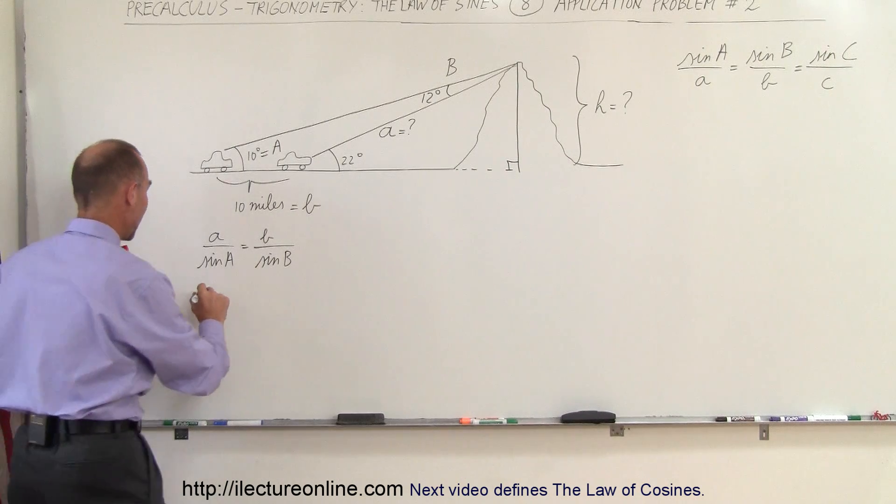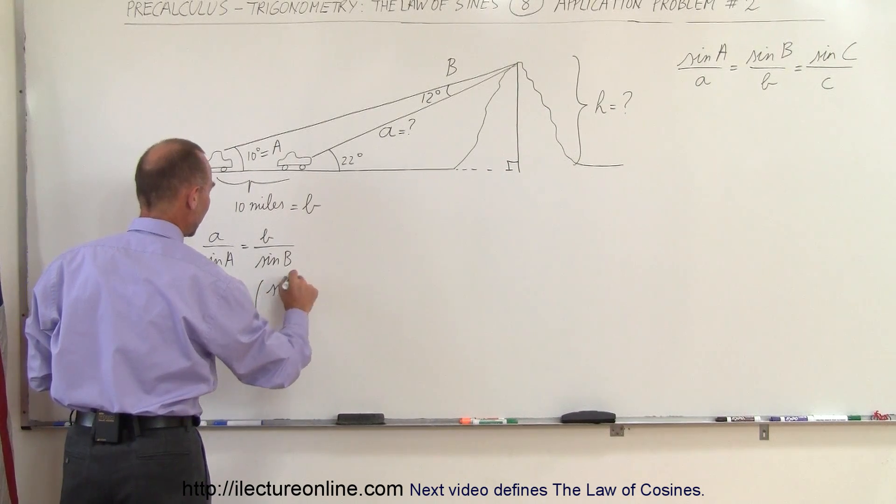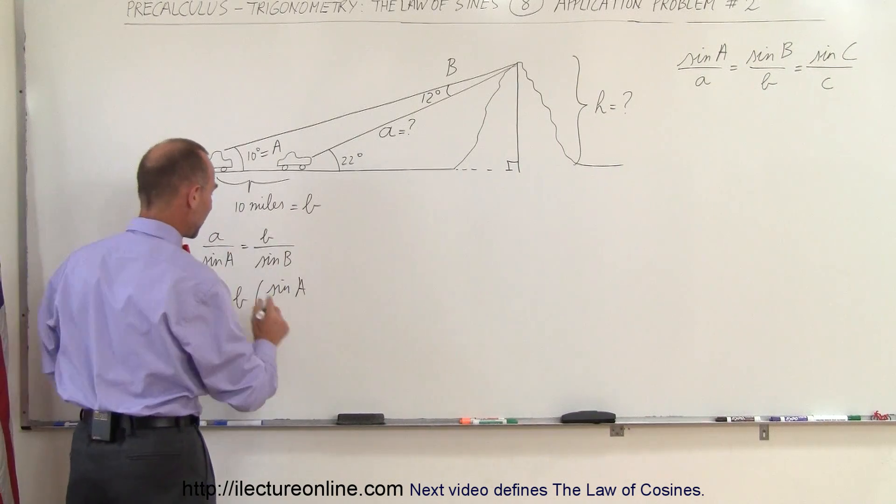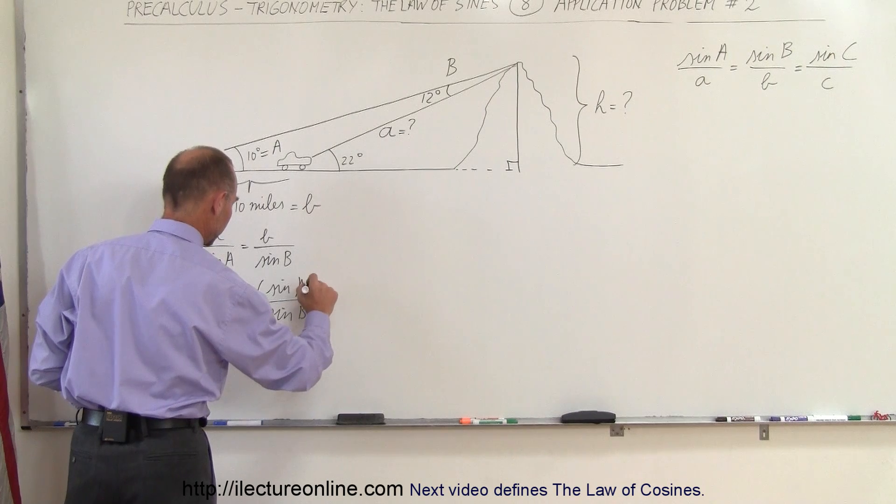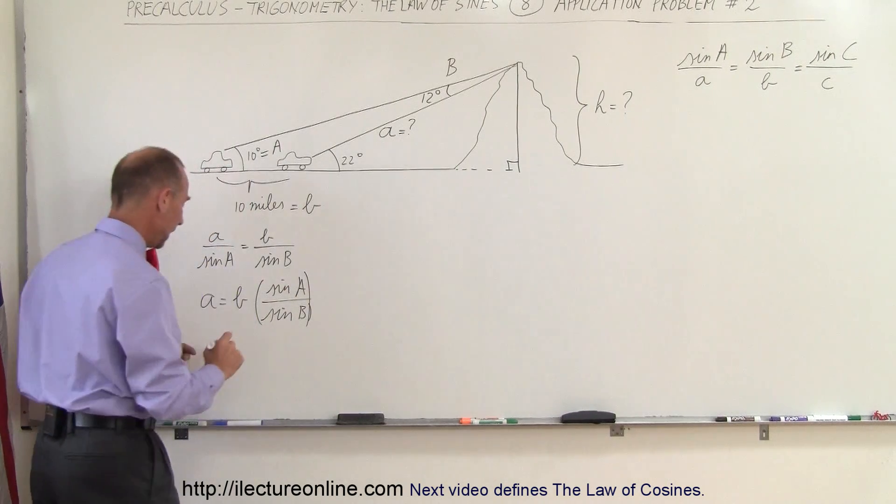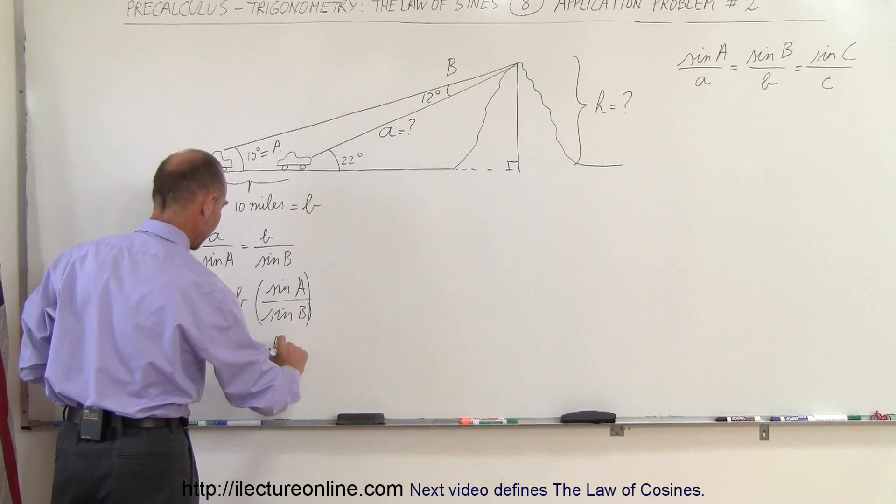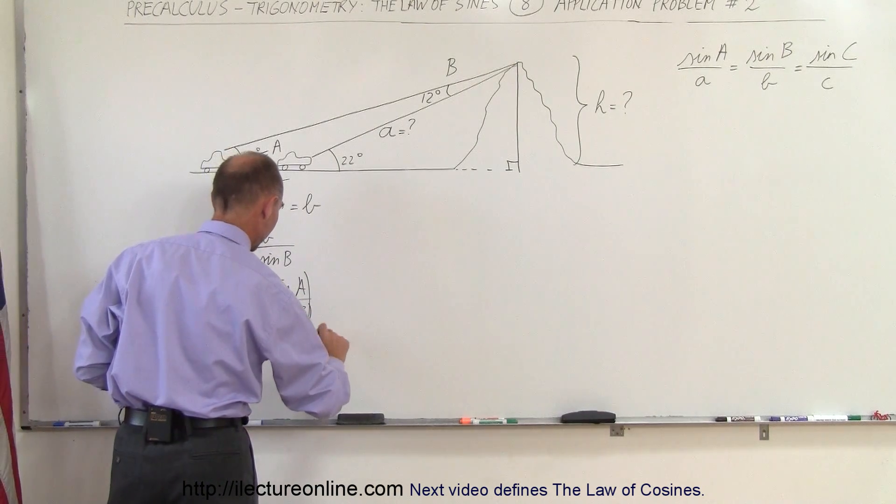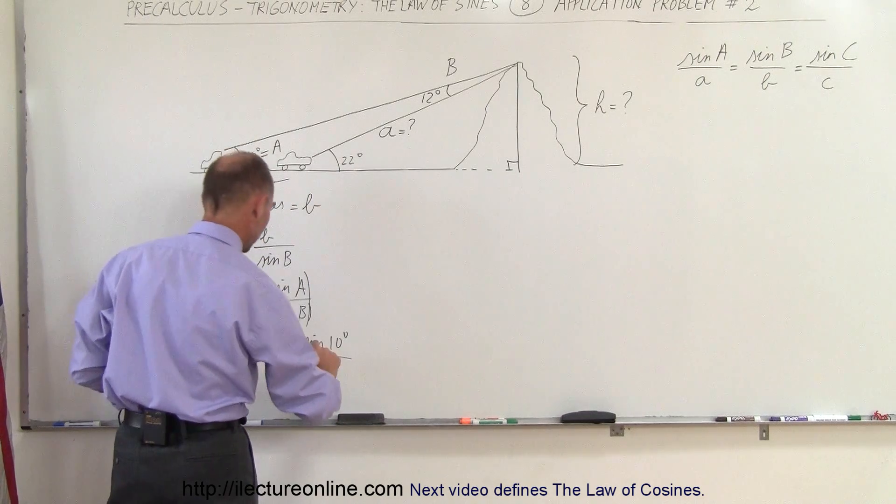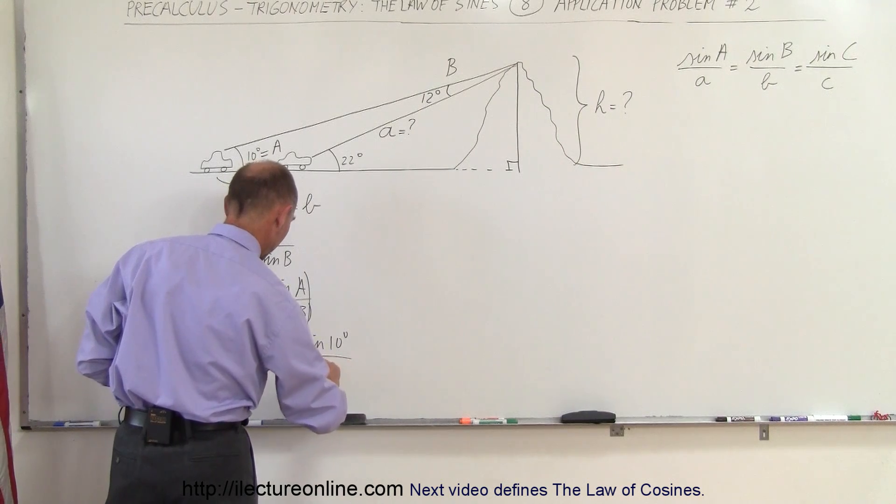Solving this equation for A, I get A equals B times the ratio of sine of A divided by sine of B. Plug in the numbers: B is 10 miles, multiply times sine of A which is 10 degrees, divided by sine of B which is 12 degrees.